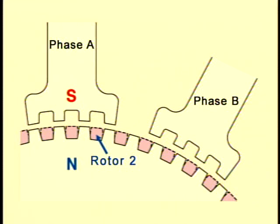The teeth in the magnetic pole in phase B are shifted from the small teeth in rotor 2 by 0.72 degrees.